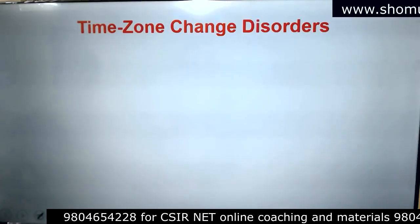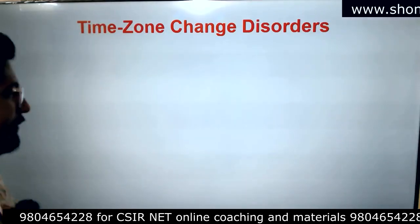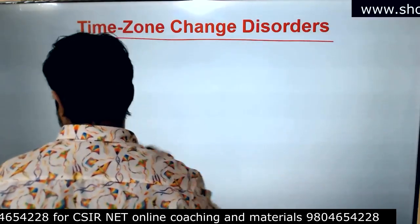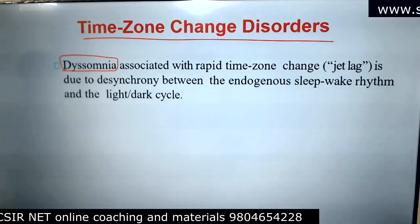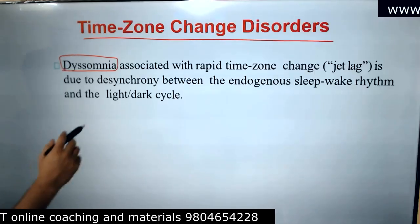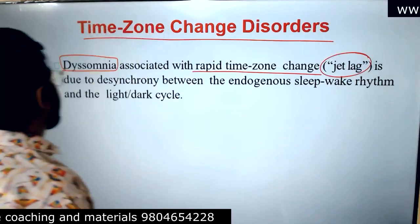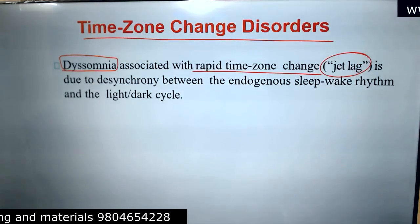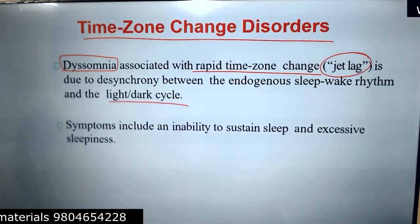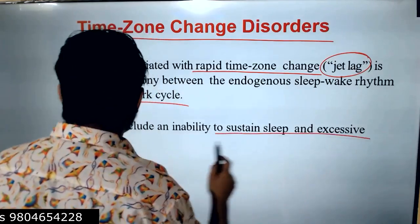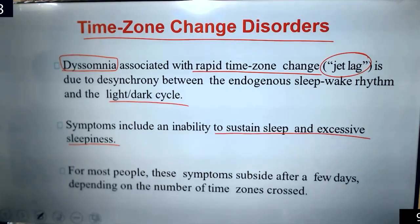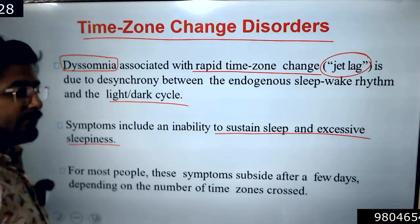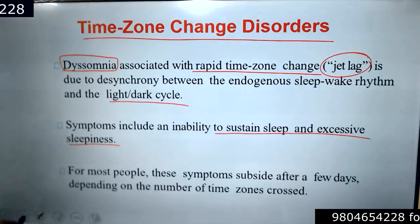One example of a rhythm-based disorder is time zone change disorder — dysomnia. Dysomnia associated with rapid time zone change, also known as jet lag, is due to desynchrony between the endogenous sleep cycle and the light-dark cycle. Symptoms include an inability to sustain sleep and excessive sleepiness. For most people these symptoms subside after a few days, depending on the number of time zones crossed.